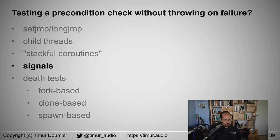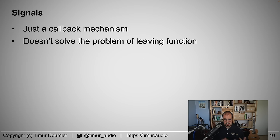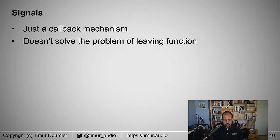The fourth approach is signals: make the assert macro raise a signal and install your own signal handler. But signals are effectively just a callback mechanism — you raise a signal, install a handler, but then you're in there and you have the same choices: return, throw an exception, or terminate. You didn't actually solve the problem at all — you just moved it to a different location. Any approach shaped like a callback is not going to solve this problem.